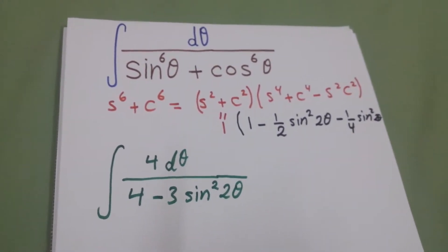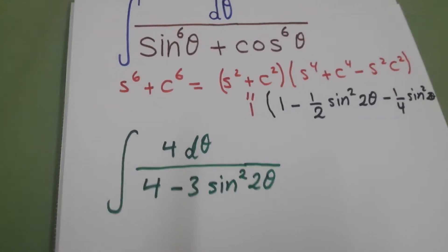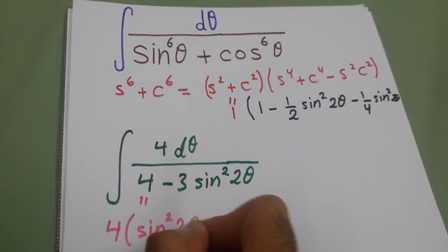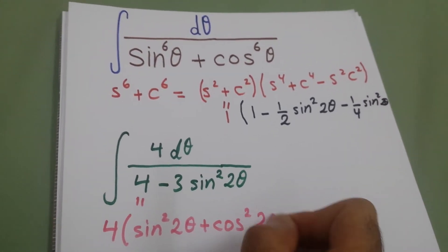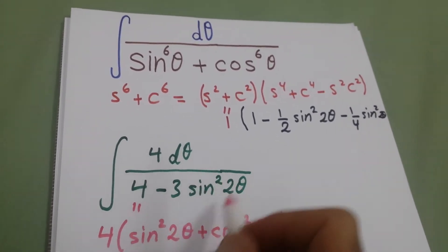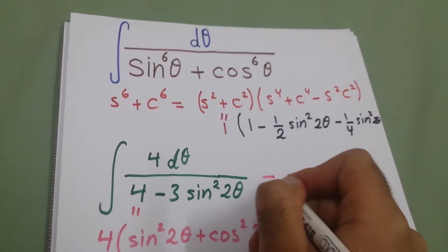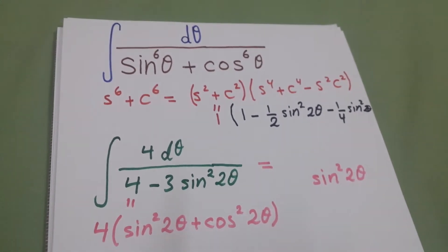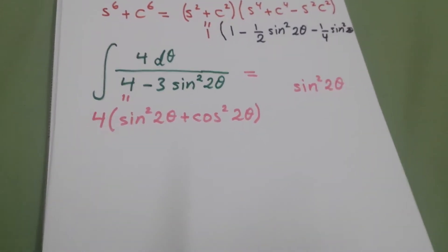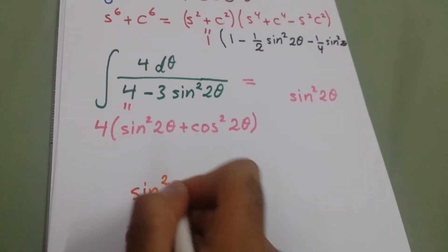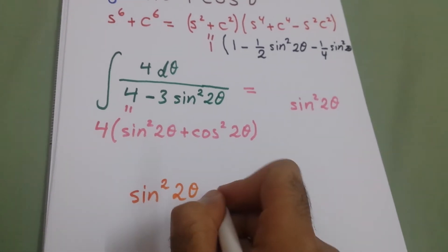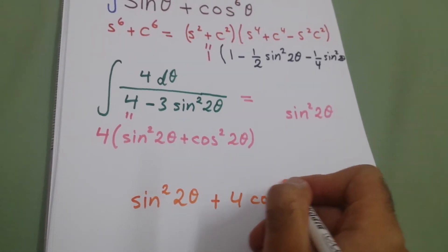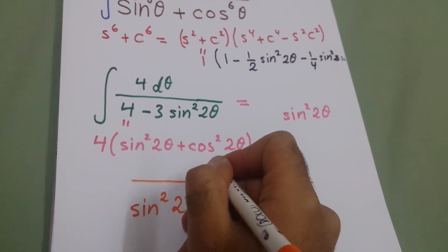We can write 4 in terms of sin² and cos²: 4 = 4·(sin²(2θ) + cos²(2θ)). So the denominator becomes 4·sin²(2θ) + 4·cos²(2θ) minus 3·sin²(2θ), which simplifies to sin²(2θ) + 4·cos²(2θ). The numerator is 4 dθ.